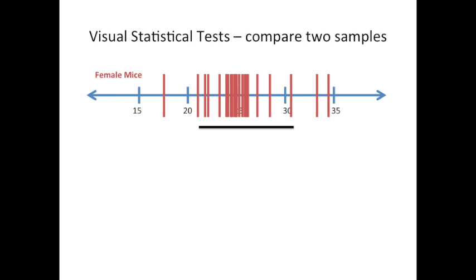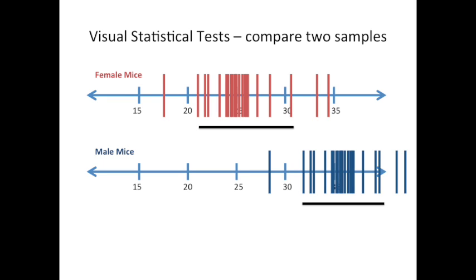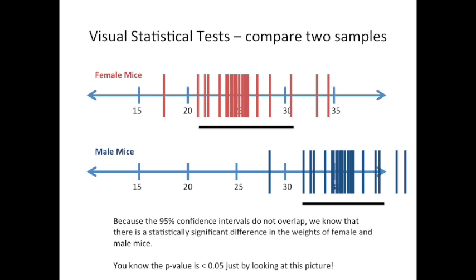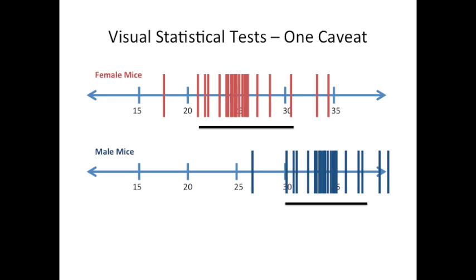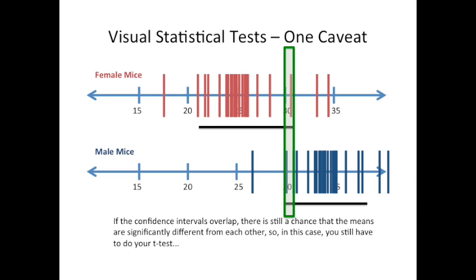Here's another example of a visual statistical test — in this case, we're going to compare two samples. Here we've weighed female mice, and now we have a sample of male mice. We've already done the bootstrapping on that sample, and in the figure we just show the means from that bootstrapping. Because the 95% confidence intervals do not overlap, we know that there is a statistically significant difference in the weights of female and male mice — that is to say, the p-value is less than 0.05 just by looking at the picture. There is one caveat: if the confidence intervals overlap, there is still a chance that the means are significantly different from each other, so in that case you still have to do the t-test. But when the confidence intervals do not overlap, you can rest assured that there's a statistically significant difference between those two means.